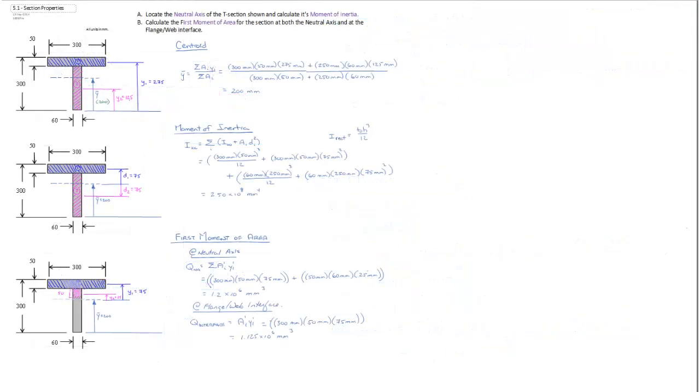There we go. That's calculating the various cross-sectional properties, the centroid moment of inertia and the first moment of area at two different locations within our built-up T-beam.